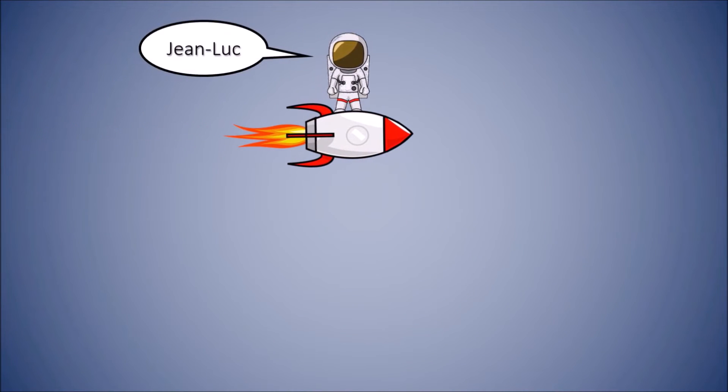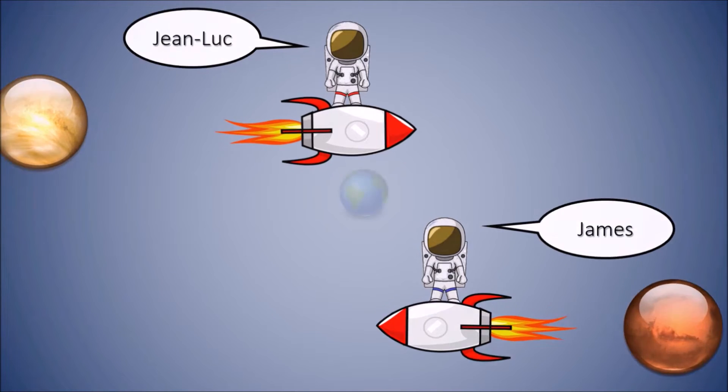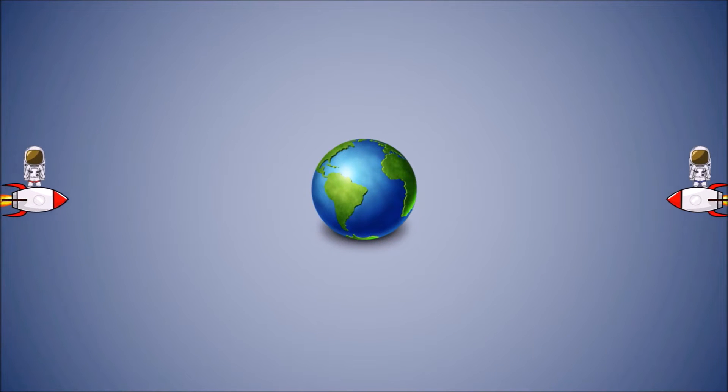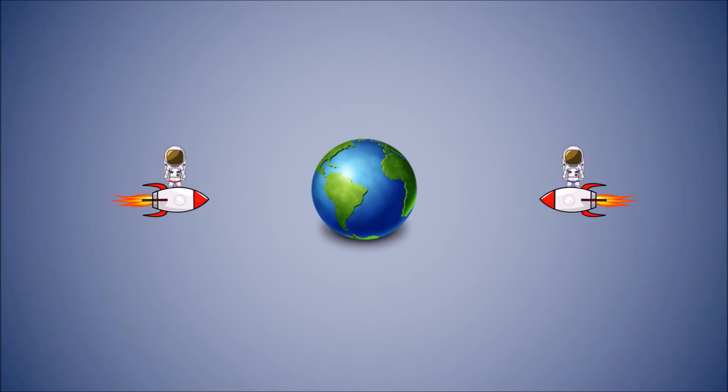This is astronaut Jean-Luc. He is on his return from a journey to Venus. And this is James. He is coming back from Mars. Jean-Luc and James are both traveling with a speed of 20,000 meters per second towards the Earth.